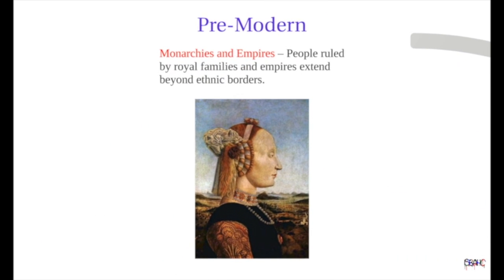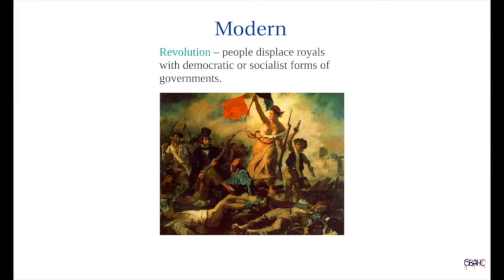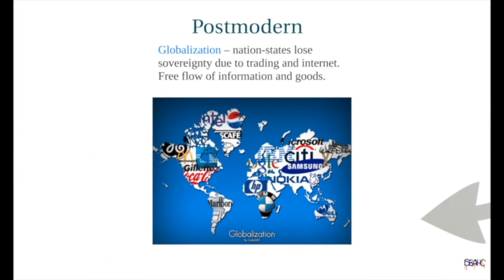Nation states ebb and flow in the pre-modern era, mostly ruled by military and family alliances. The political revolutions of the modern period displaced many of the world's dynasties with republican or socialist states governed by the people. With the globalization of economies in the postmodern era, sovereign borders begin to break down, meaning governments must meet the needs of the changing demographics of their populations.